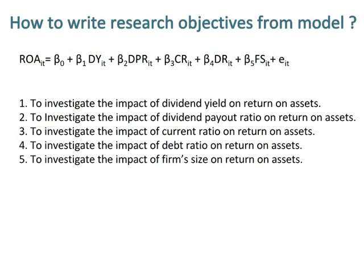You can easily write your research objectives once you identify the variables. The left side variable of the model is ROA, which is the dependent variable, while the right side variables are the independent variables. Thus, the first objective is to investigate the impact of dividend yield on return on assets.